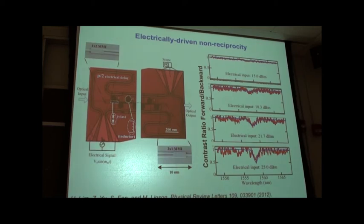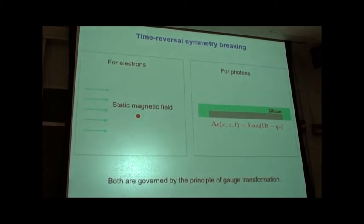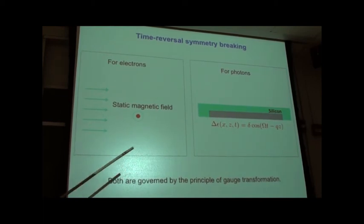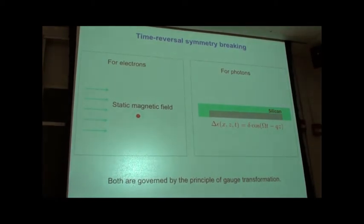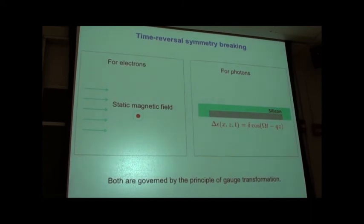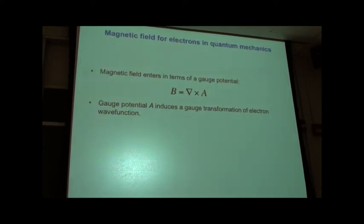This brings me to the second part of my talk: gauge field and gauge potential for photons. What we're doing is breaking time-reversal symmetry for photons using modulation — we modulate the refractive index in time. In the electronic world, you would instead apply a static magnetic field. On the face of it, these two schemes are completely different — but there is a very strong connection: both are actually governed by the principle of gauge transformation. To illustrate this, let me first quickly review how the gauge potential enters in quantum mechanics for electrons.